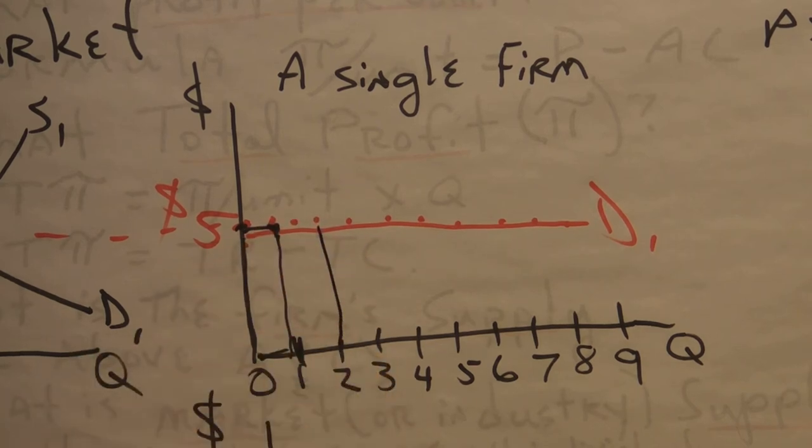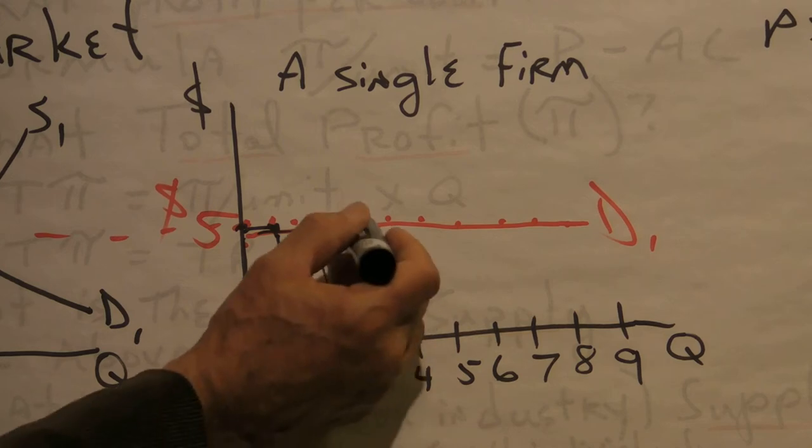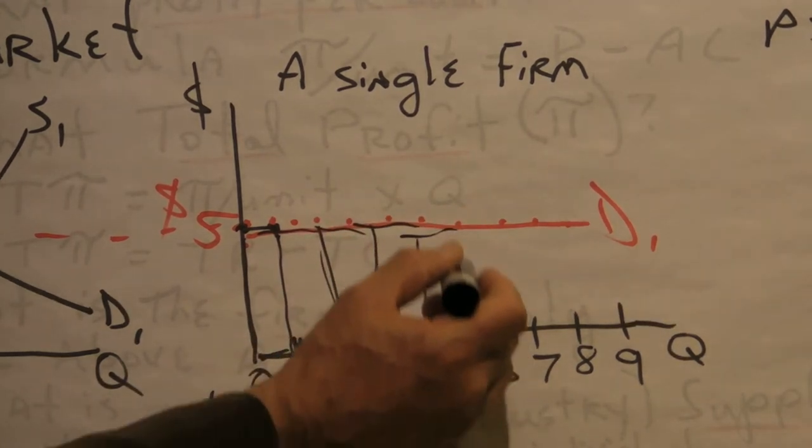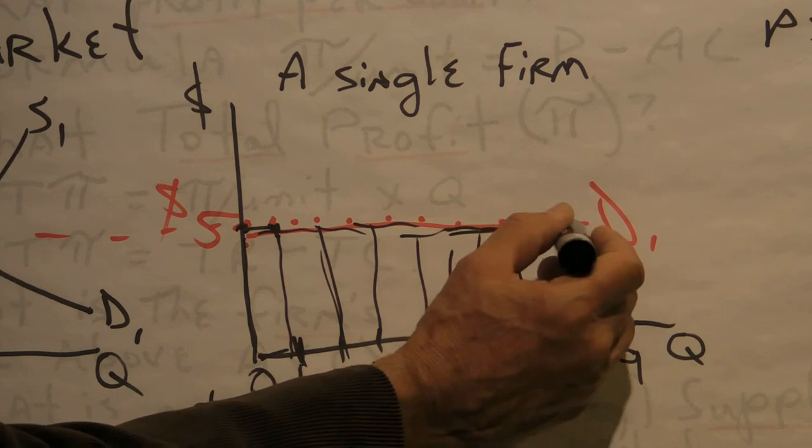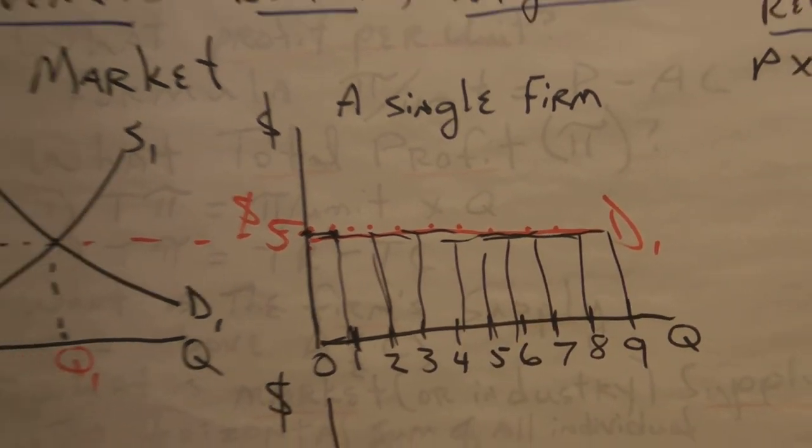When they sell two units, their total revenue is two times five. When they sell three, it's three times five, etc. So the total revenue increases by exactly $5.00 every time they produce and sell one more unit.